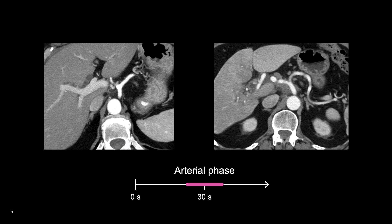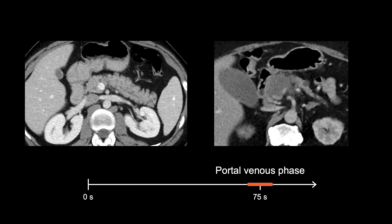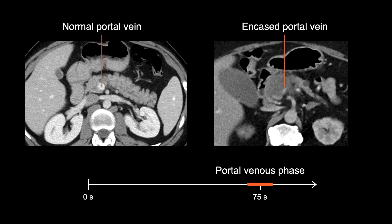In the example on the right, we can see soft tissue encasing the celiac artery, when compared to the normal celiac artery on the left. Similarly, here we can compare a normal rounded portal vein near the pancreas head to the narrowed, slit-like portal vein seen in this image on the right. This appearance indicates venous encasement by the pancreas head mass.